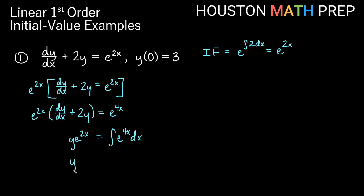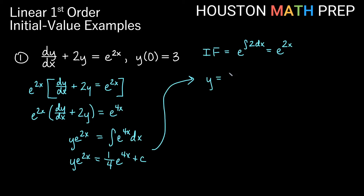Taking the antiderivative gives us y times the integrating factor equal to the antiderivative of e to the 4x dx. So we get y times e to the 2x equals — the reciprocal of 4 comes out — one fourth e to the 4x plus some constant. Now let's solve for y by dividing everything by e to the 2x, which gives us y equals one fourth e to the 2x.